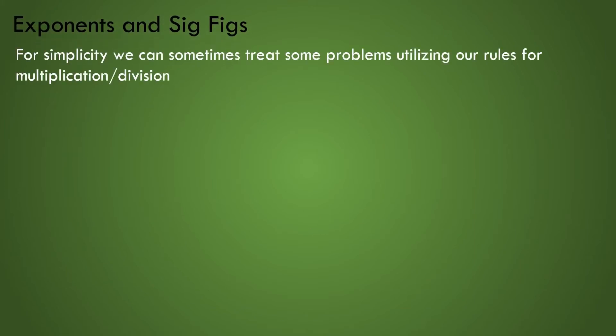Now how do we incorporate sig figs into our exponential math? For simplicity, we can treat simple problems utilizing our rules for multiplication and division. For 4.2 to the power of 3, where 4.2 has 2 sig figs, if we rewrite the problem as 3 multiplications and obey our regular rules, we can assume the answer will have to be 2 sig figs as well.